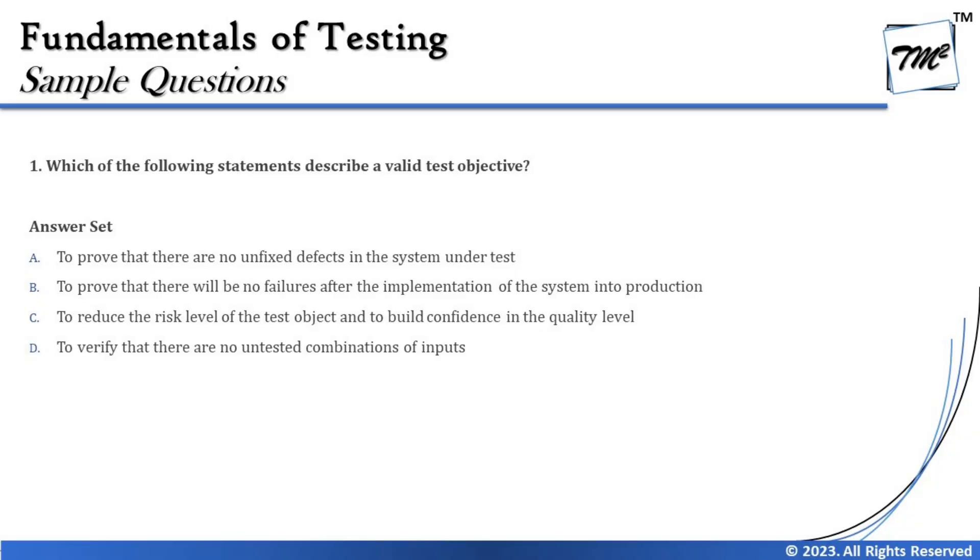Option A says: to prove that there are no unfixed defects in the system under test. This statement completely conflicts with Principle 1 — testing shows the presence of defects, not their absence. Testing is not a process that leads to a defect-free product; it can continue forever. Also, it's not necessary to resolve every single defect found — some may be deferred due to extra cost or lack of a workaround. So we cannot claim there are no unfixed defects.